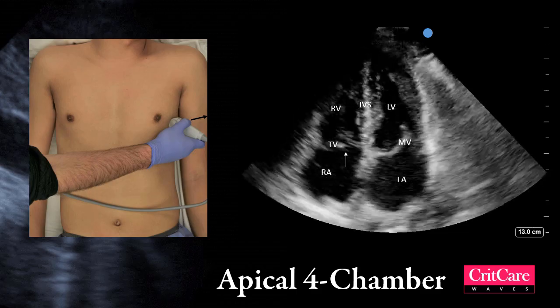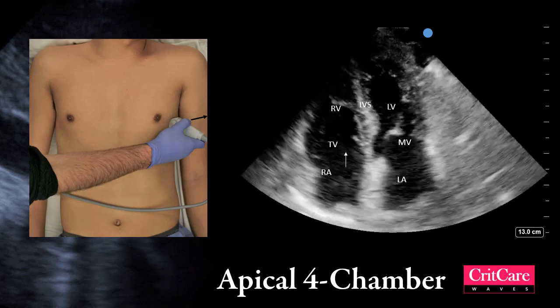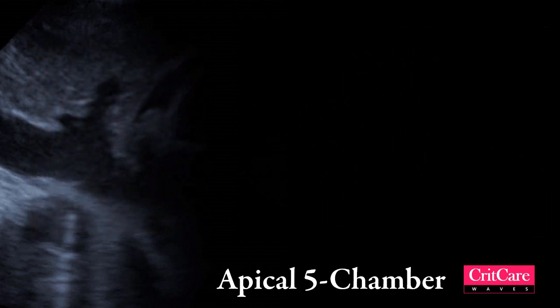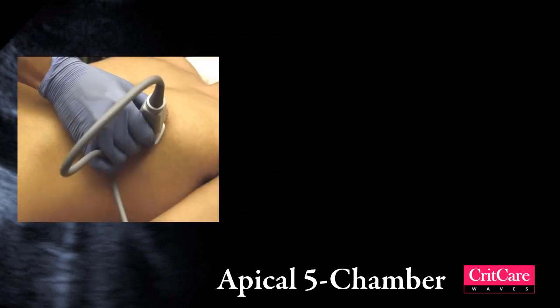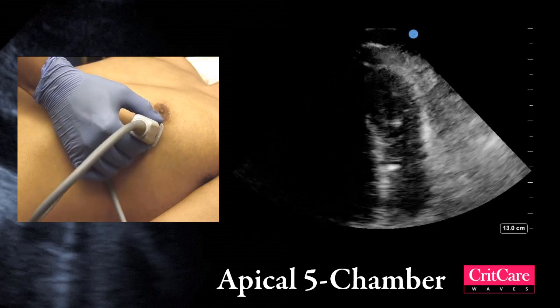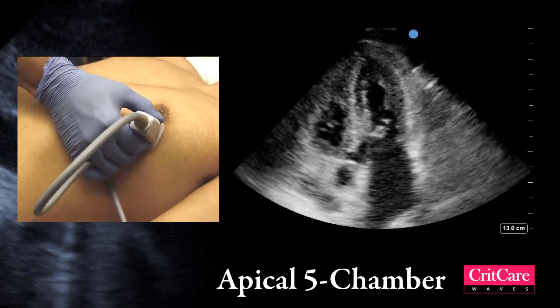The next view obtained in the apical region is the apical 5-chamber view. This view is important as it is used to calculate stroke volume and cardiac output in the ICU setting, which will be discussed in a separate video. To obtain the 5-chamber view, start by obtaining the 4-chamber view and slowly plane the probe anteriorly as shown in the video.